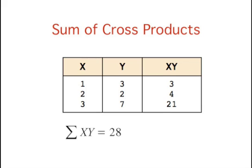Some formulas involve the sum of cross products. The table shows the data for variables X and Y. The cross products, X times Y, are shown in the third column. The sum of the cross products is 28. The formula at the bottom shows how to express this in summation notation.